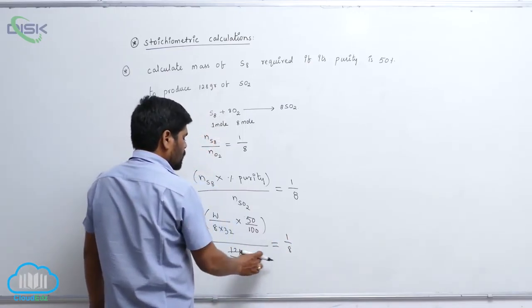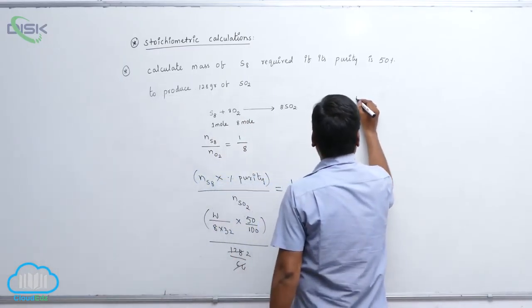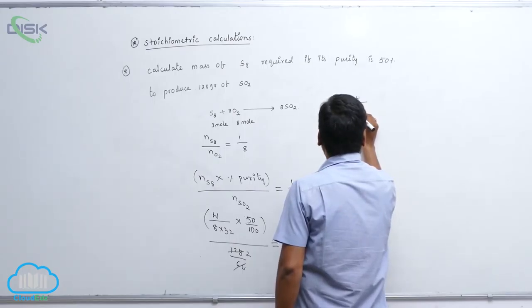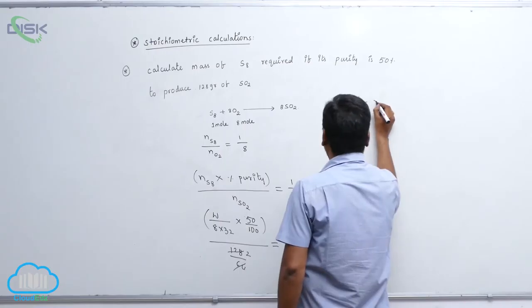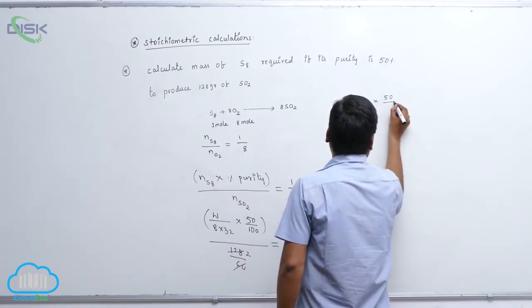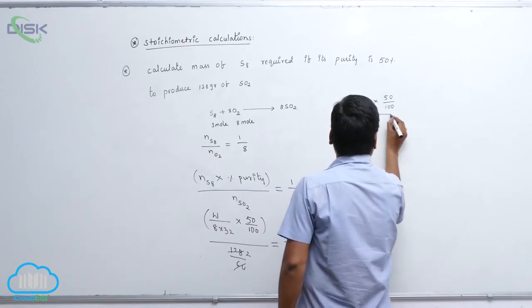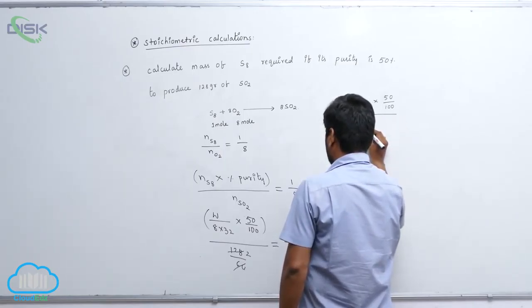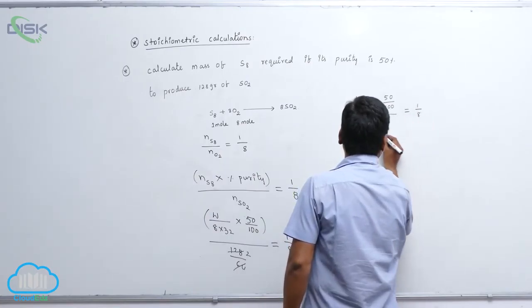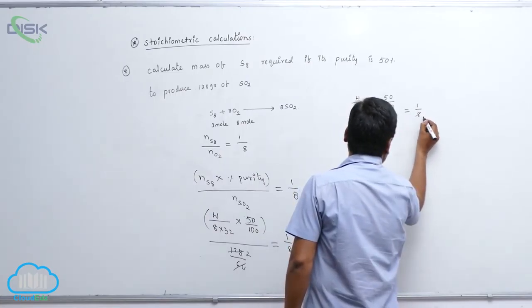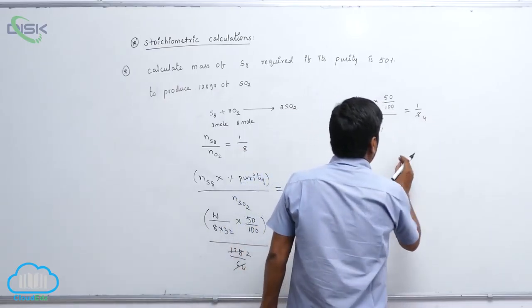Then this 2 goes here, so W by 8 into 32 into 50 by 100 divided by 2 equals to 1 by 8. This is 1, this is 1, it is 4.